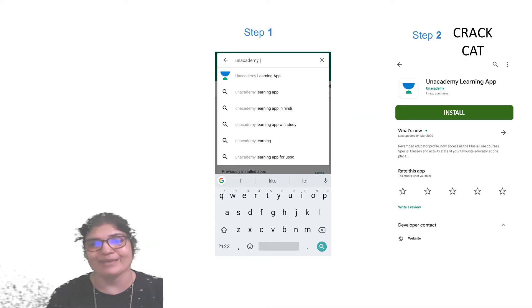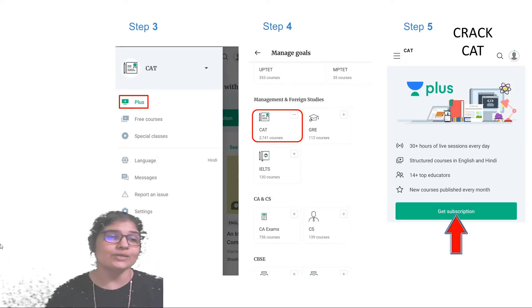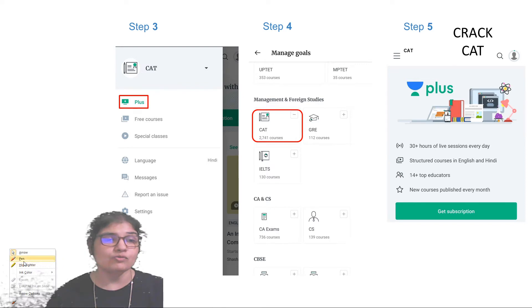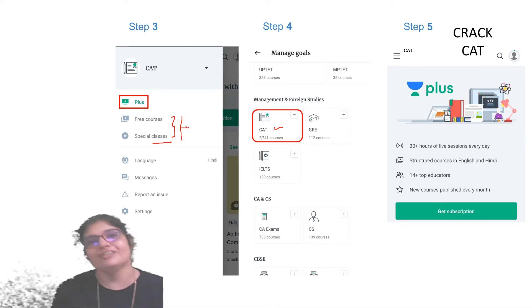So first thing you need is of course the Unacademy app. Just go to the Play Store, download and install the Unacademy learning app. Within that, what you need to do is go for the CAT goal and subscribe to the plus courses. If you just want to try things out, you may even actually just go for the CAT goal and try out our free courses and special classes. This is available for all our users and this will give you a great idea on how well our platform is structured towards helping students to crack preparatory exams. I'm sure within a day or so you'll be convinced and you'll go for the plus subscription.